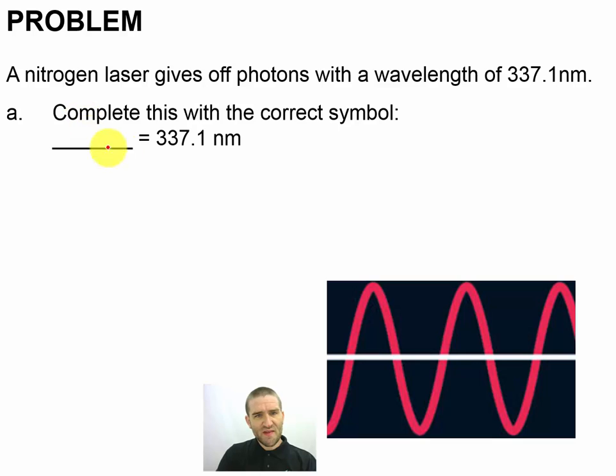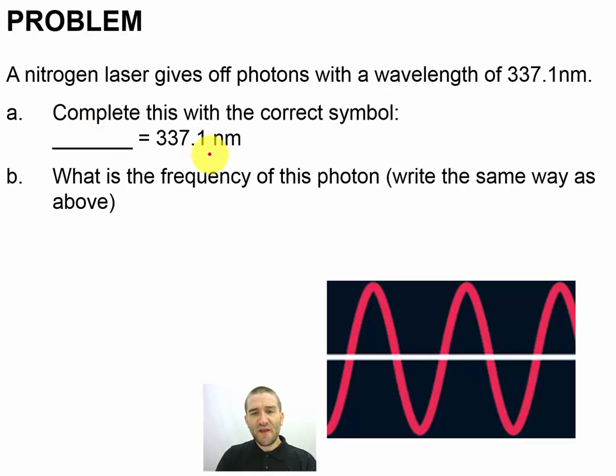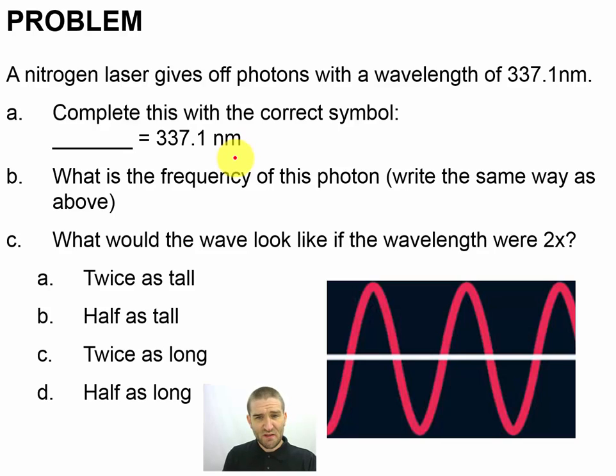Complete this expression with the correct symbol, then determine the frequency of the photon and write it down with the correct symbol equals correct value and sig figs and the correct unit. For the last piece of it, answer the question what would the wave look like if the wavelength were double? Go ahead and pause the video and give that a try.